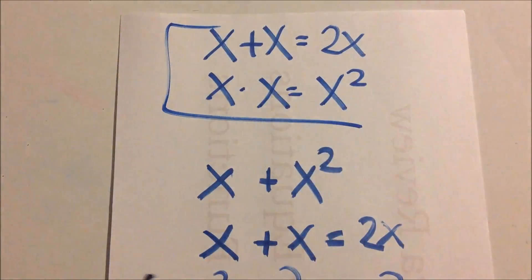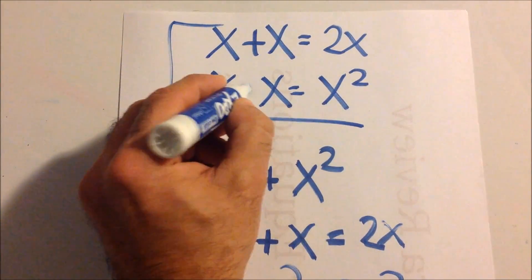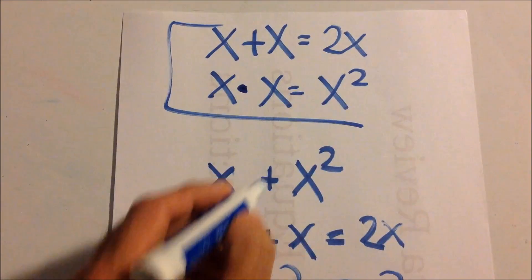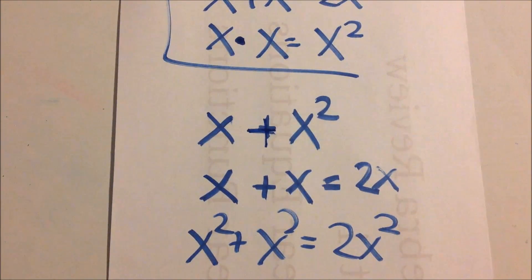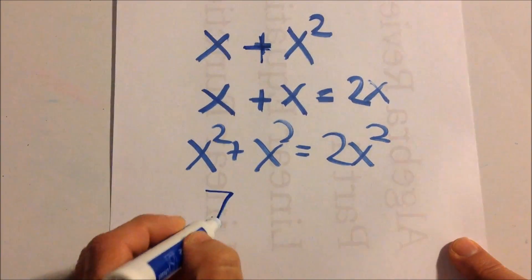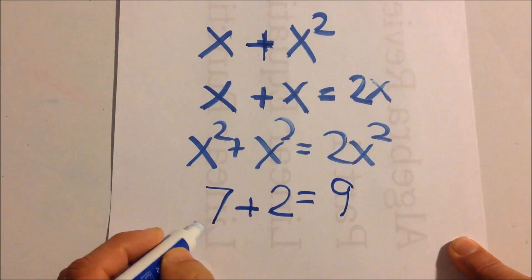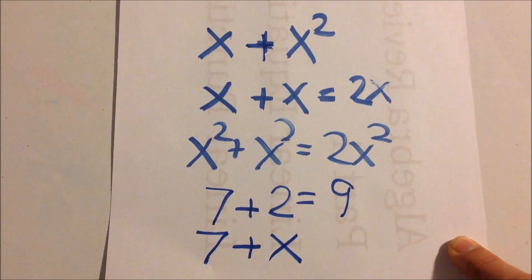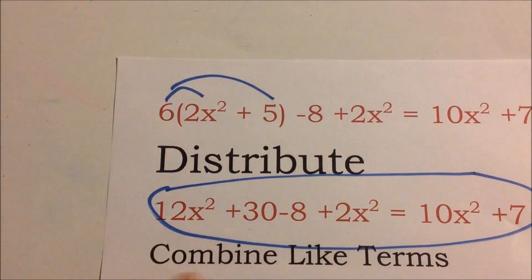Keep that in mind. You can combine terms using addition or subtraction, but they have to have the same term. Same with constants — we can combine 7 plus 2, but we can't combine 7 plus x. So going back to our equation after distributing, we have this.